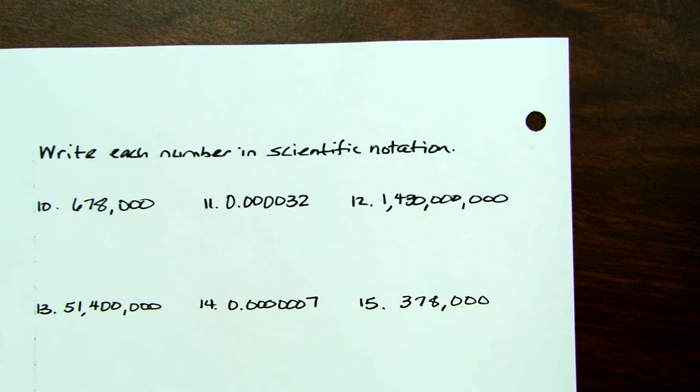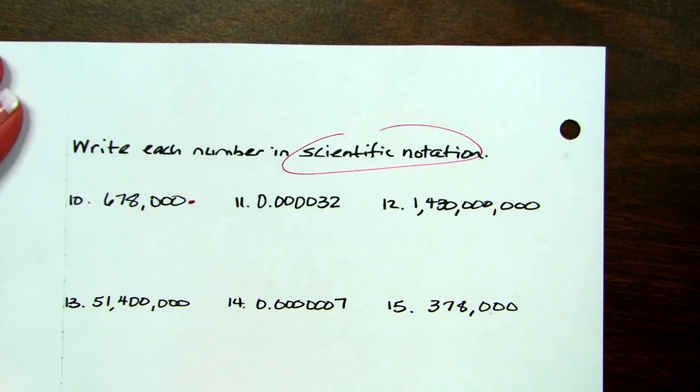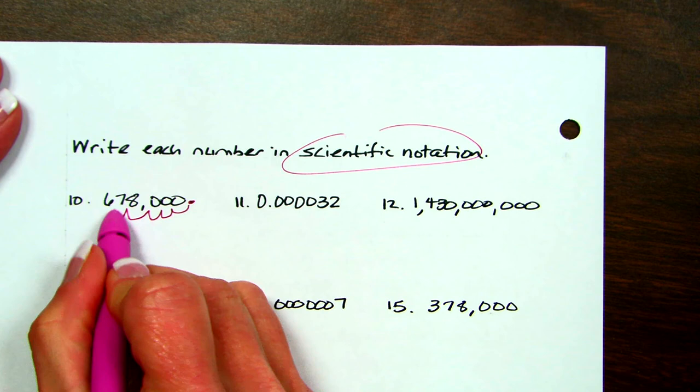Okay. The other two parts of this lesson is writing a number in scientific notation. So here's the decimal. And to create a number between 1 and 10, I go back 1, 2, 3, 4, 5 to 6.78 times 10 to 1, 2, 3, 4, 5, the fifth power.